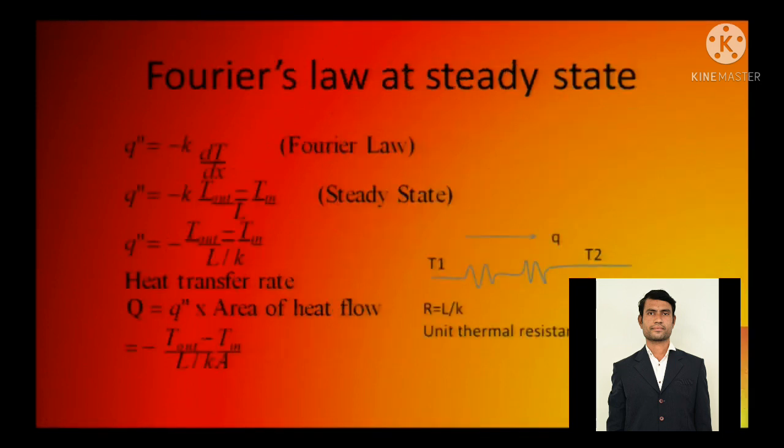Fourier's law at steady state. See heat transfer rate: q equals minus k dT by dx. So dT will be broken up like T out minus T in. So it is q equals T out minus T in by L by k a. And this L by k a is called thermal resistance.